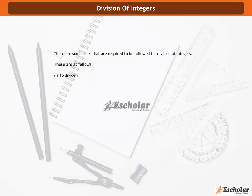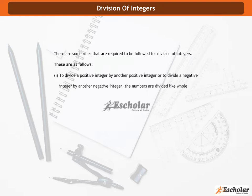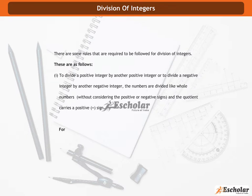To divide a positive integer by another positive integer, or to divide a negative integer by another negative integer, the numbers are divided like whole numbers without considering the positive or negative signs. And the quotient carries a positive sign.